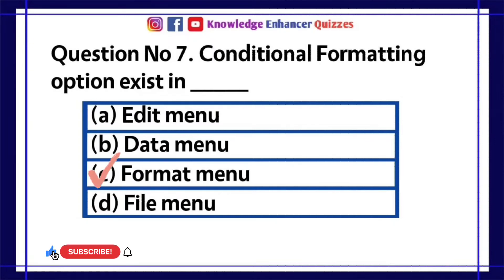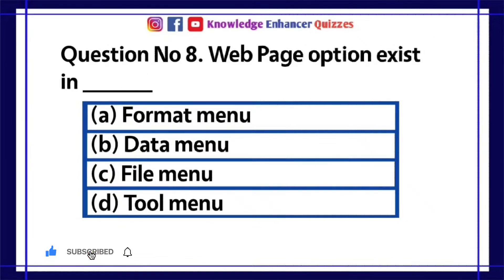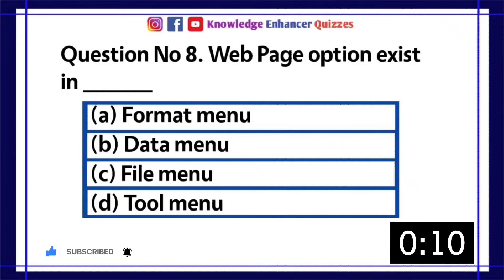Option C is the right answer. Question number 8: Web page option exists in: A. Format menu, B. Data menu, C. File menu, D. Tool menu.